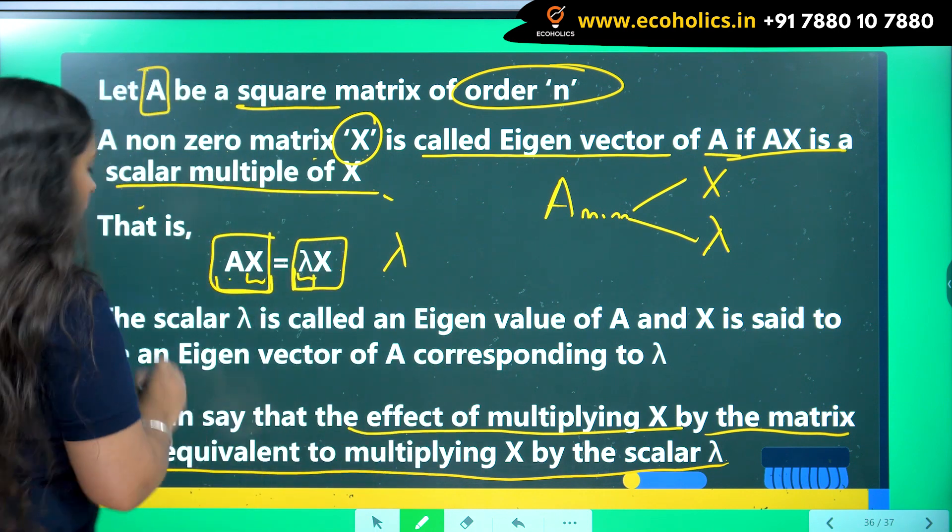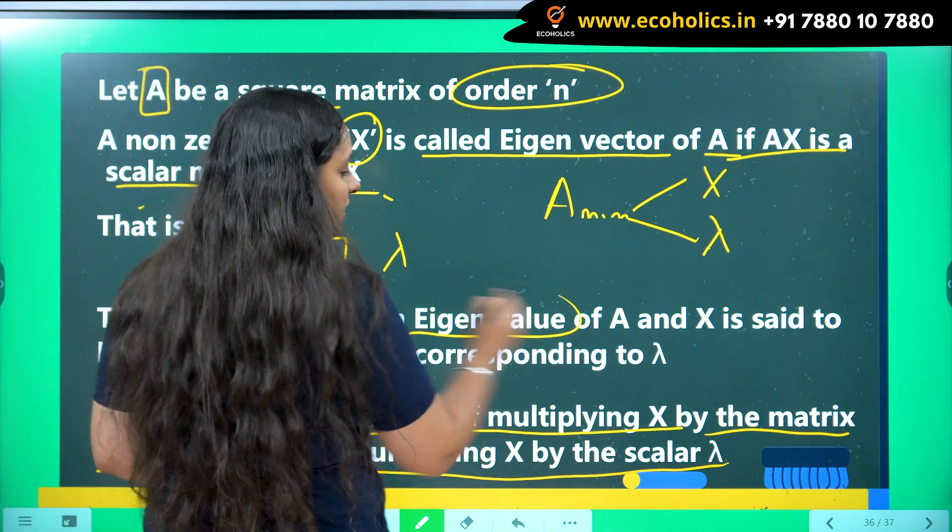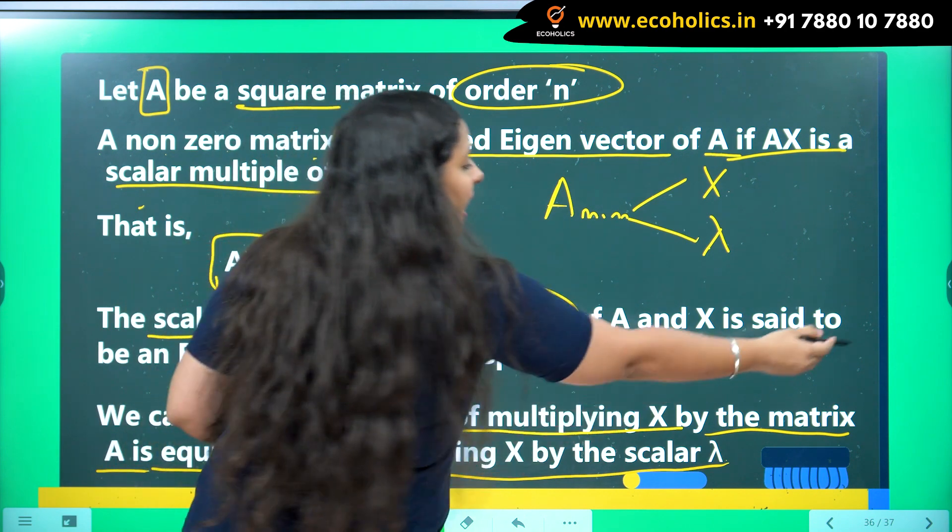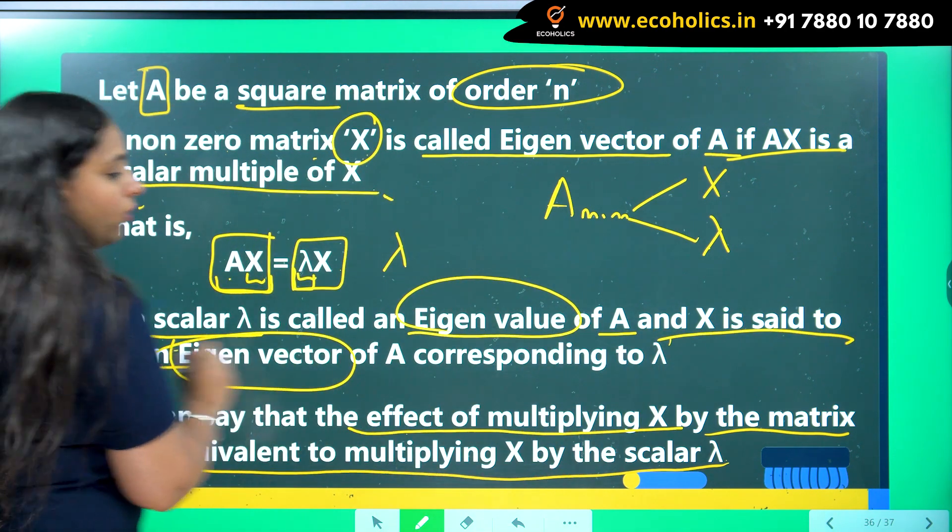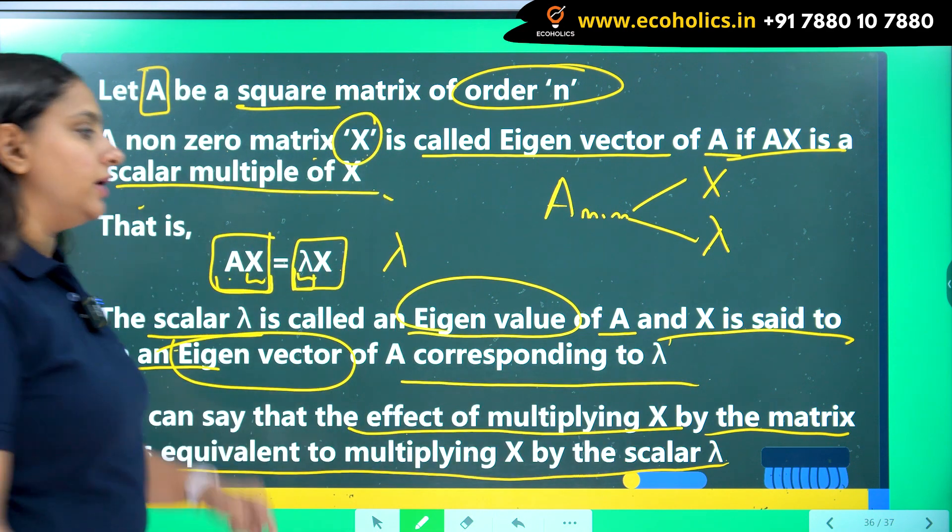So the scalar lambda is called as an eigenvalue of A and X is said to be an eigenvector of A corresponding to lambda here.